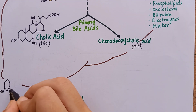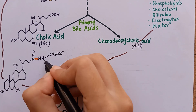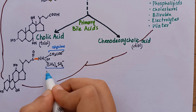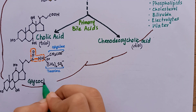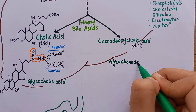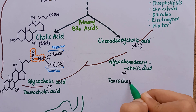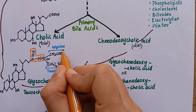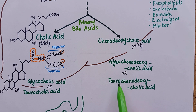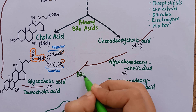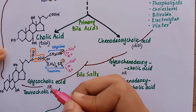Before the bile acids leave the liver, they are conjugated to a molecule of either glycine or taurine, forming an amide bond between the carboxyl group of the bile acid and the amino group of the added compound. The resulting conjugates include glycocholic acid, glycochenodeoxycholic acid, taurocholic acid, and taurochenodeoxycholic acid. The addition of glycine or taurine allows these conjugates to exist in fully ionized form at physiologic pH, which is why the conjugated forms are called bile salts. They exist as sodium and potassium salts in the bile.